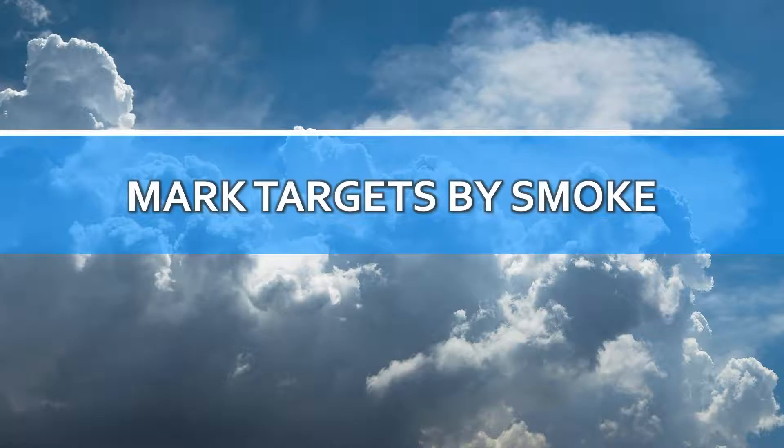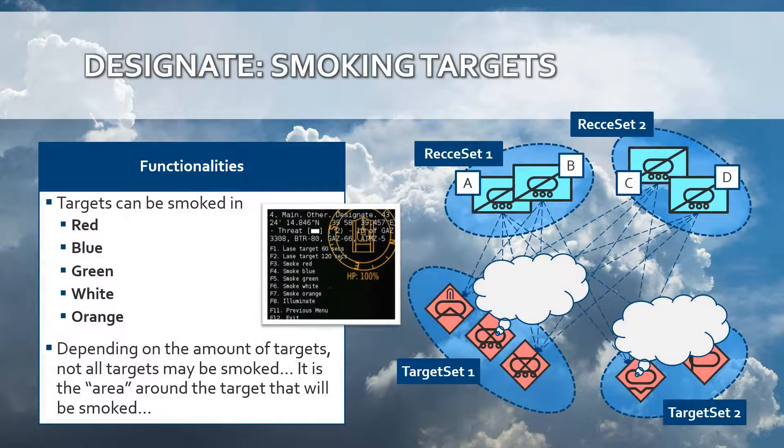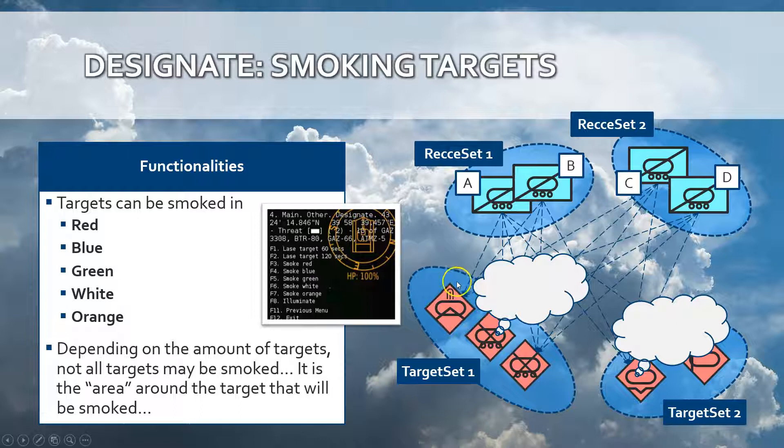Another capability possible in the designated class is to mark targets by smoke. When you open your designation menu, you will see these options: smoke red, blue, green, white, orange. You are able to smoke target sets by using one of these options. Not all of the targets will be smoked, but the area around the targets will be smoked within a defined parameter. This models the inaccuracy of reconnaissance vehicles smoking targets because they have to fire the smoke bomb towards that target.